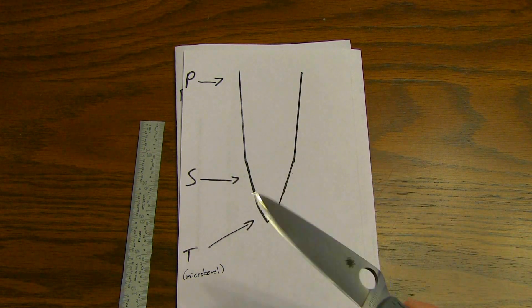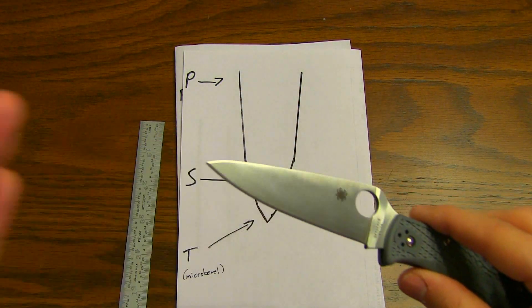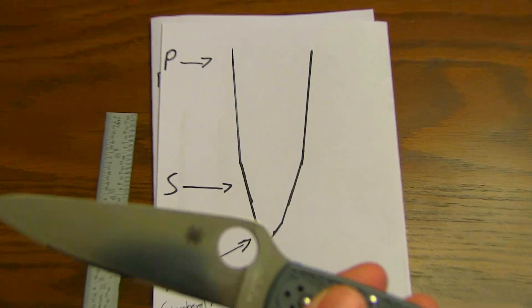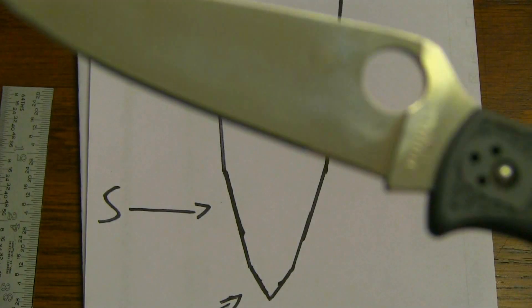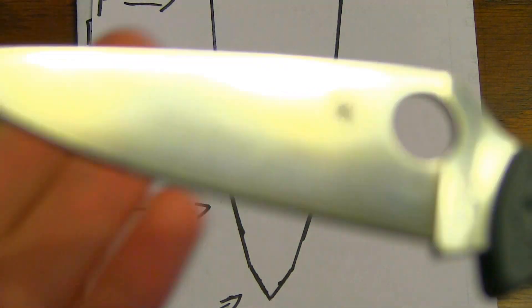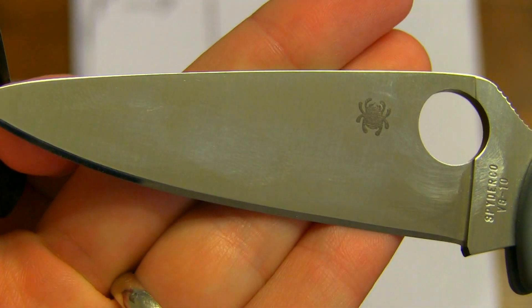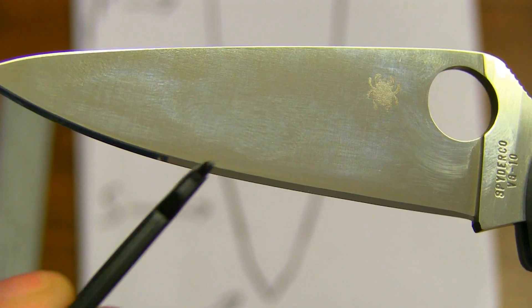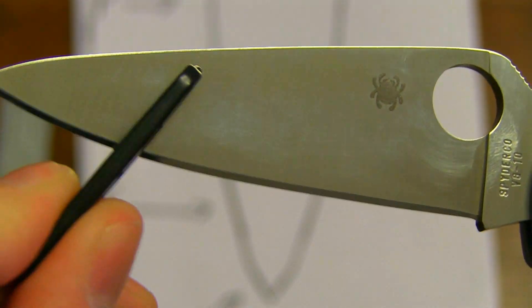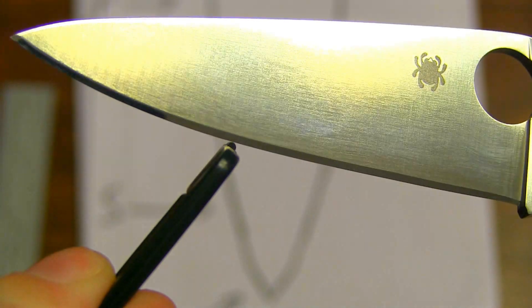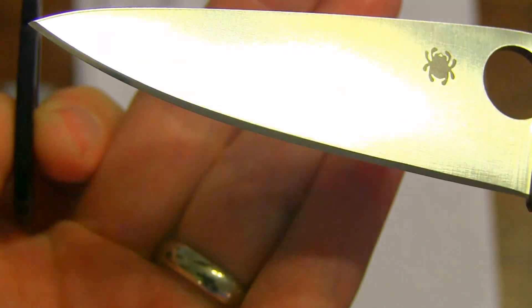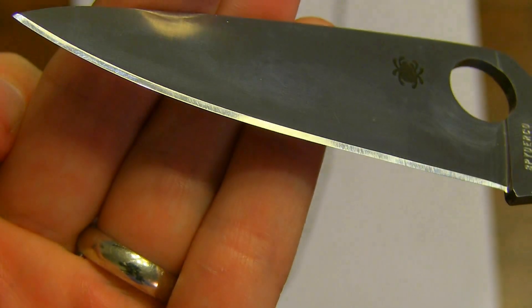This knife does have a micro bevel, although it might be a little hard to see. You have to have just the right light to show it. You have your primary up here, secondary down here where it's real shiny, and then the edge will catch light right there.